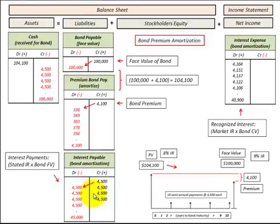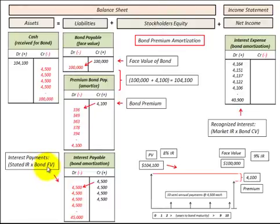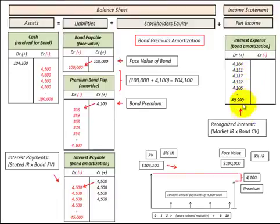We also have the semi-annual interest payments we have to pay on the bond. We record those by increasing our interest payable at the stated rate of interest times the bond's face value. Then we have interest expense, which is what we include on the income statement — that's based on the market rate of interest times the bond's carrying value, where the carrying value is the bonds payable amount plus the premium that has been amortized down.